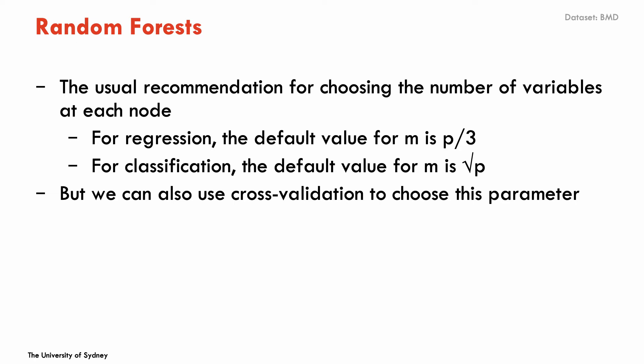So how many predictors should we evaluate at each node? Well, from simulation studies, the recommendation is for regression problems, so when the outcome is continuous, a good value to choose is the number of variables divided by three. Approximately, obviously.